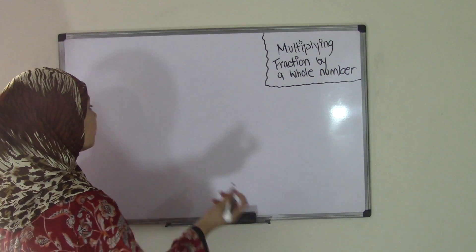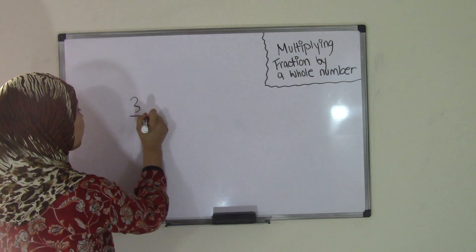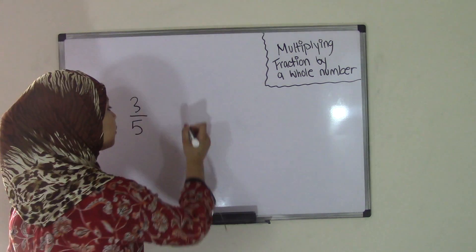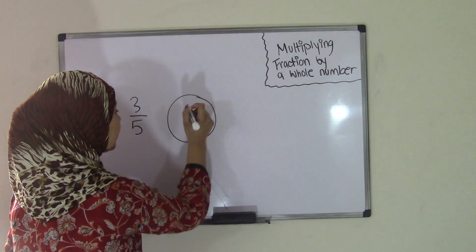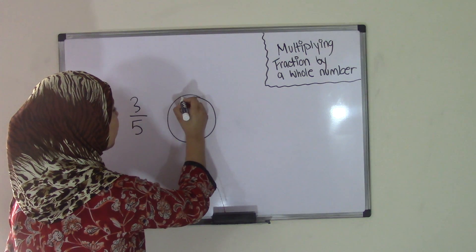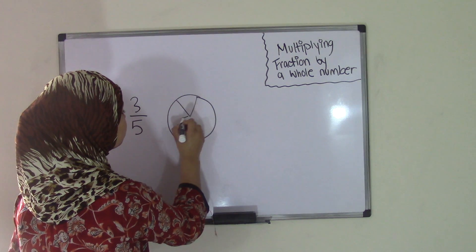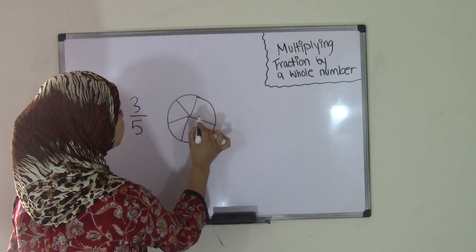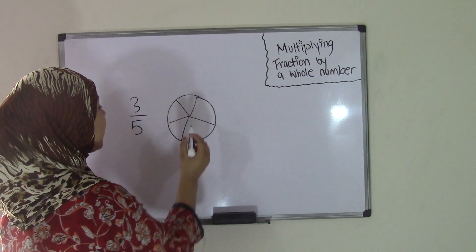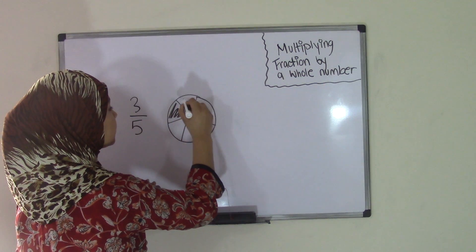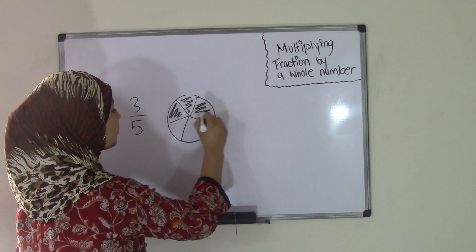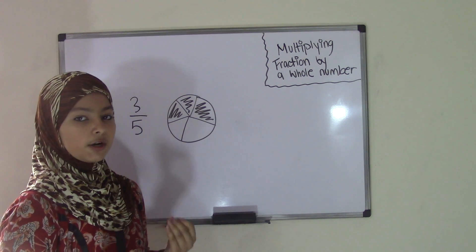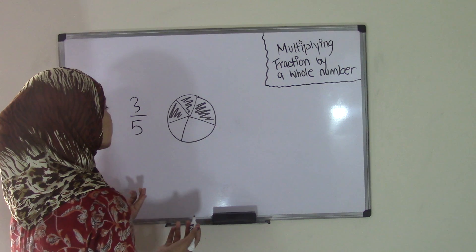So for an example, it could be 3 out of 5. So 5 is the entire number. For example, if we had a circle and split it into 5 parts—that makes it 1, 2, 3, 4, 5—and 3 of the parts are shaded in: 1, 2, 3. This is a fraction because 3 parts out of an entire 5 parts are shaded in. So that's the fraction.